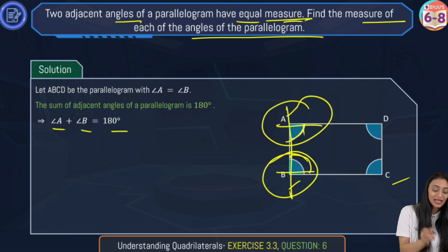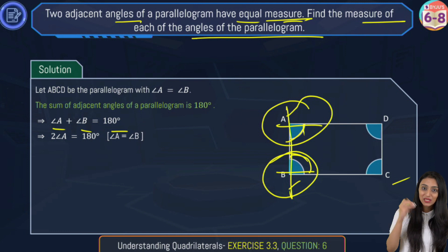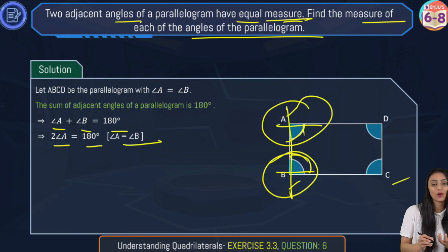I can say that angle A plus angle B is going to equal 180 degrees. Now angle B could be replaced with angle A. I can say that twice of angle A is going to equal 180 degrees, and we have to mention the reason why we are doing it.